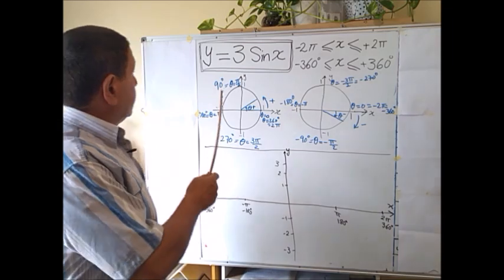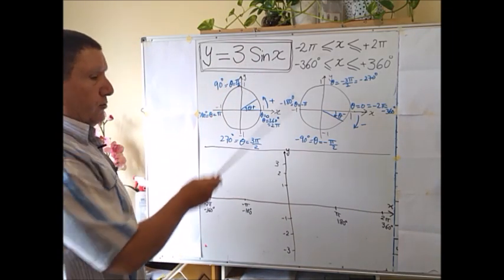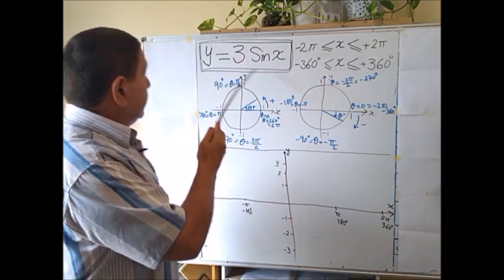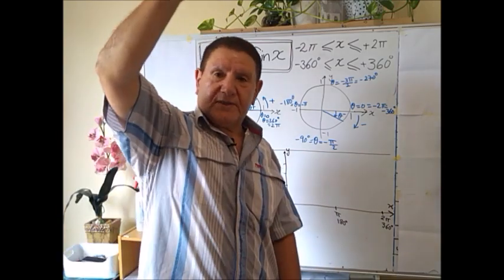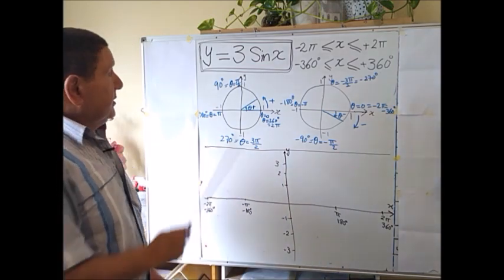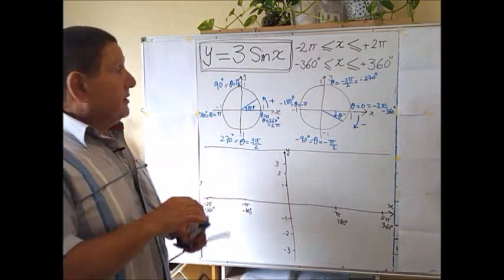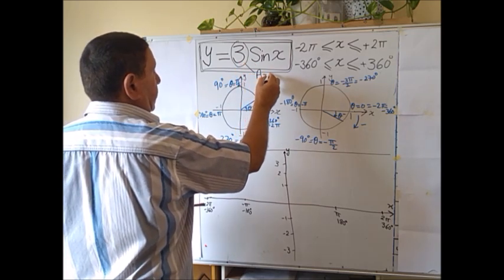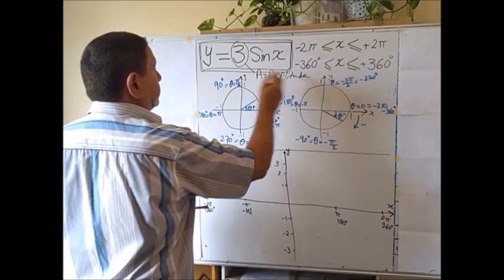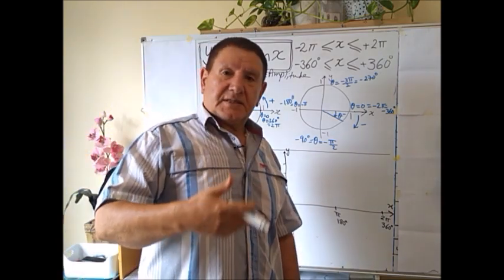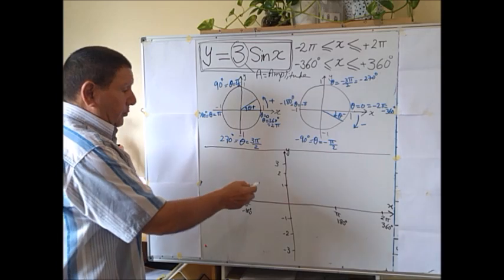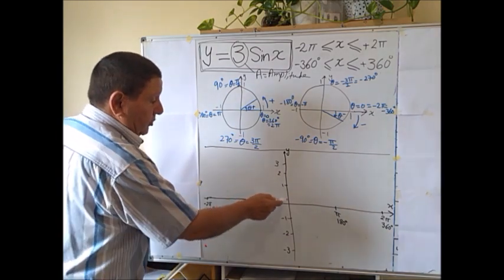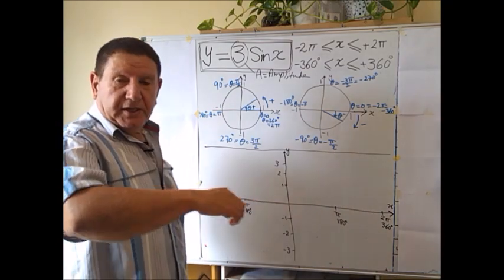We want to simplify it first, so we have y = 3 sin(x). Normally the basic function is y = sin(x) — there's just a 1 there. This number here is the amplitude — it means how high the wave is above the center line. The letter 'a' is sometimes used for amplitude. In the basic function y = sin(x), the amplitude is 1, so the wave goes up to +1 and down to -1.